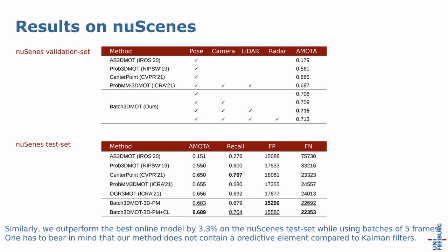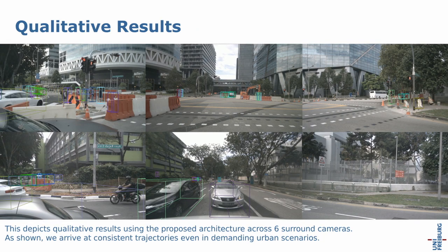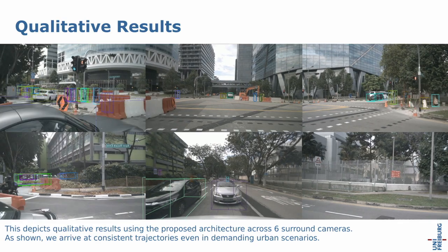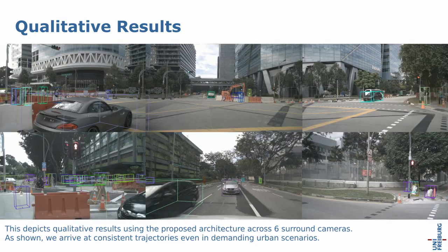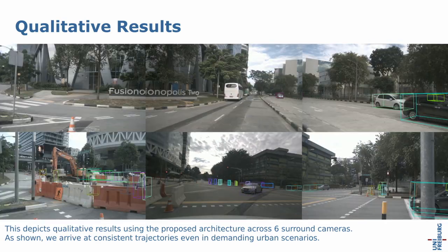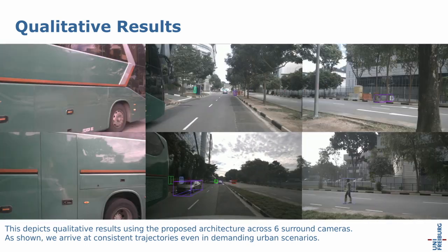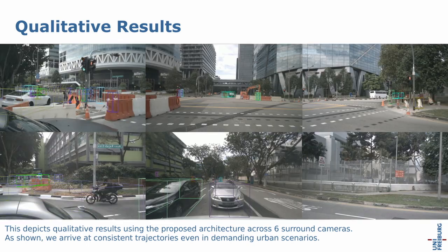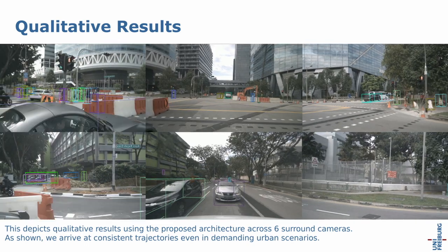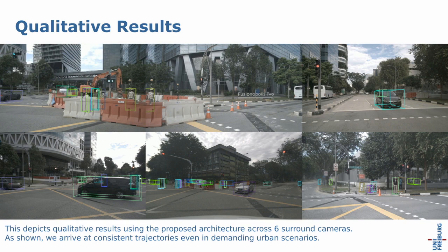One should bear in mind that our method does not contain a predictive element compared to, for example, common trackers. This depicts qualitative results using the proposed architecture across six surround cameras. As shown, we arrive at consistent trajectories even in demanding urban scenarios.